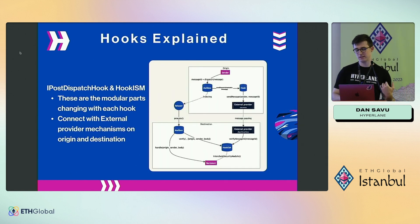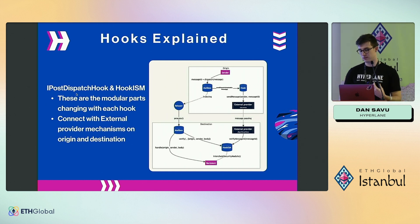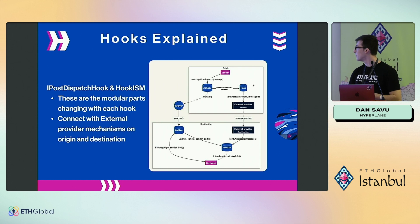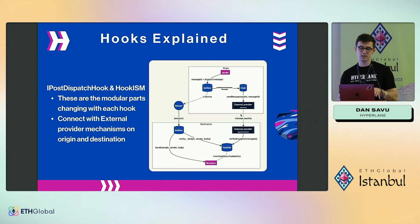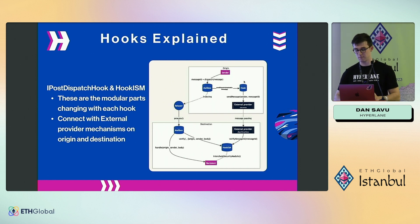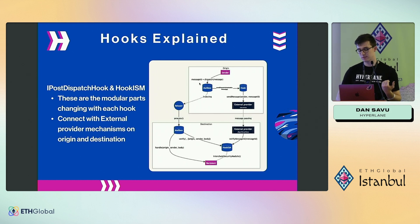A hook is comprised of two contracts: one that lives on the origin chain and another on the destination chain. In this diagram you can see the hook and the hook ISM — these essentially abstract over the interactions of the external bridge provider. The sender calls the mailbox and specifies the hook they want their message routed via.